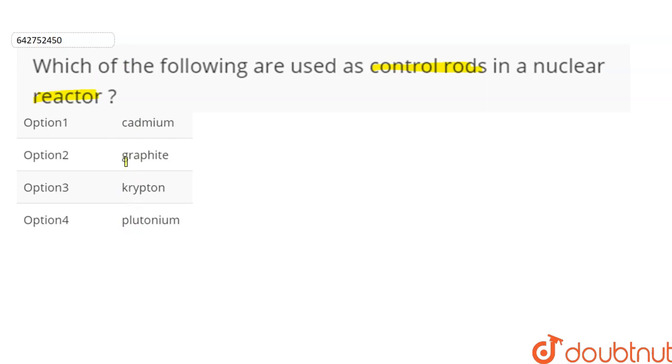The job of control rods is to control the neutron emissions, because during nuclear fission a number of neutrons are ejected and these neutrons which were ejected strike the atoms of the radioactive fuel adjacent to them.